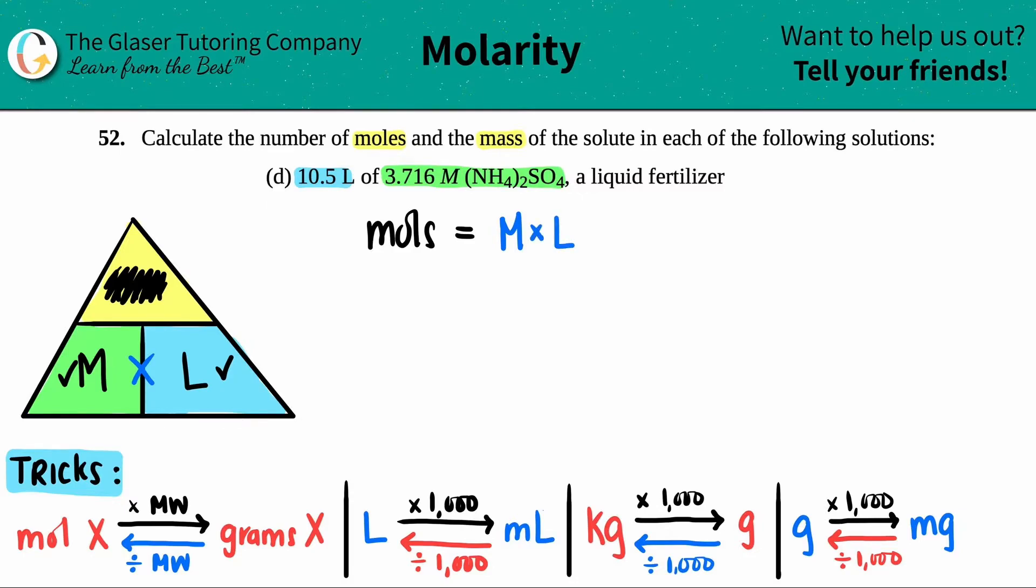Now all I got to do is just plug in my numbers. It's as simple as that. So I'm solving for my moles of solute. And in this case, it's the ammonium sulfate. And it's 3.716 times the 10.5. You can keep your units in there. I'm just not going to for simplicity purposes, because I know that the unit that's coming out is moles. So in this case, moles equals 3.716 times 10.5. The lowest number of sig figs is in the volume. It's 10.5. So my answer technically should have three sig figs.